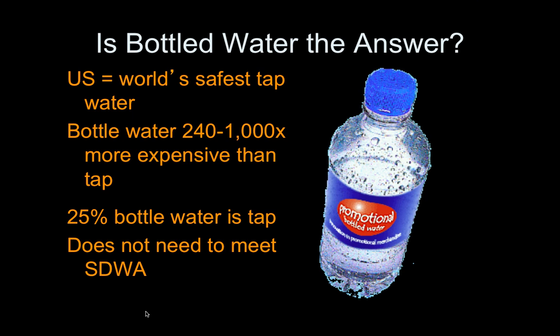What about bottled water? The United States actually has the safest tap water in the world, and bottled water is roughly 200 to almost 1,000 times more expensive than tap water, so there's really no reason not to use tap water. A quarter of the bottled water you purchase actually just comes from the tap anyway. Furthermore, bottled water does not have to meet the Safe Drinking Water Act policies that tap water does have to meet — all reasons why you should not be using bottled water.